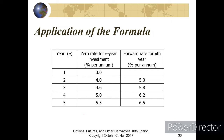To find the 3-to-4-year forward rate, apply the formula: (5% × 4 − 4.6% × 3) / (4 − 3) = 6.2%, as shown in the table. Alternatively, to find the 3-to-5-year forward rate where T1 = 3 and T2 = 5: (5.5% × 5 − 4.6% × 3) / (5 − 3) = 6.85%.